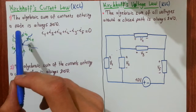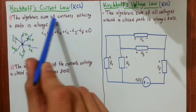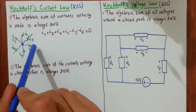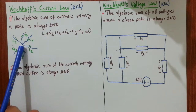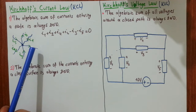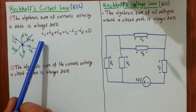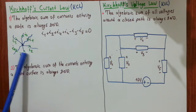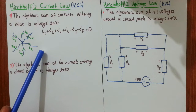The first statement of Kirchhoff's current law is: the algebraic sum of the currents entering a node is always zero. So imagine you have a node connected to several branches, and of course there are currents flowing through those branches. If you sum them up according to their directions, what you get is always zero.